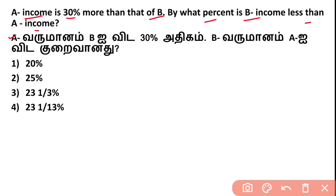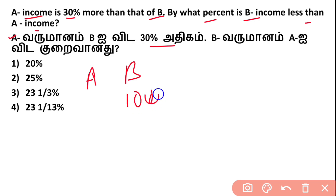So A's income is 30% more than B's income. We need to find by what percentage B's income is less than A's income. This equals approximately 23.07% — B's income is less than A's income. The difference here uses A as the common base.